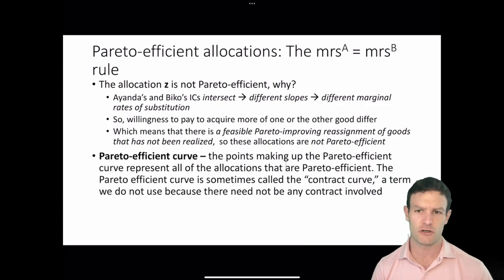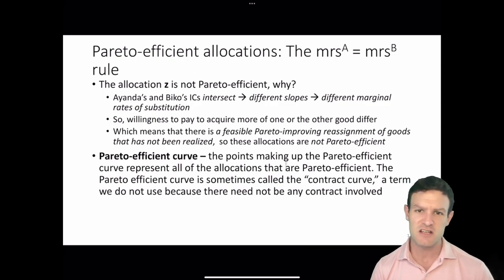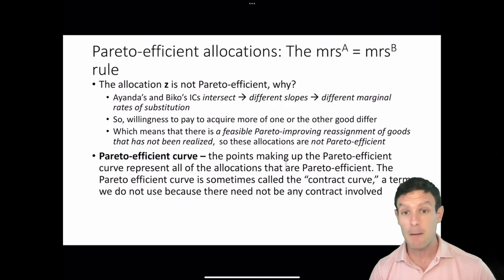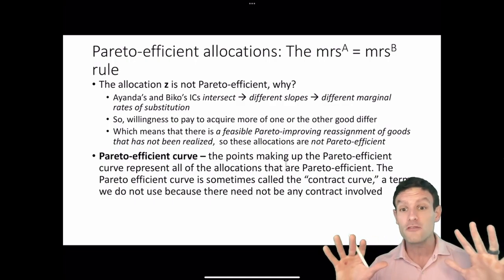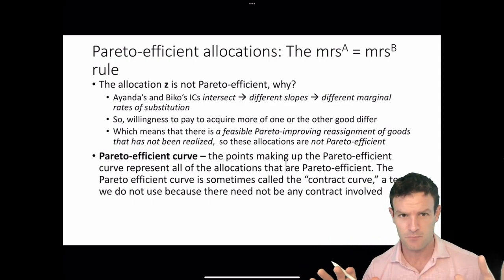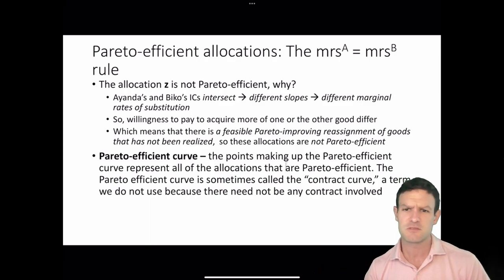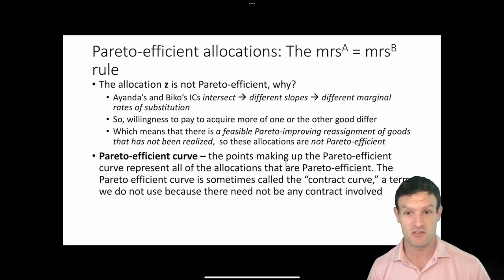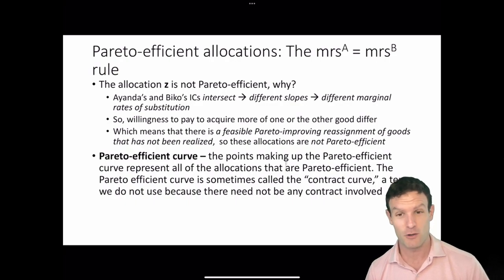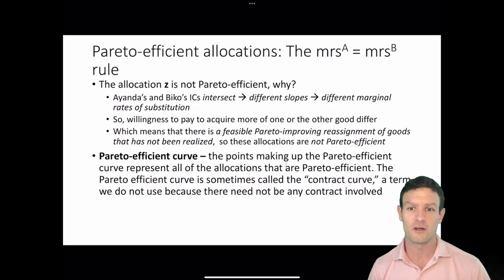The Pareto efficient curve is a term that we're going to use repeatedly. The points making up the Pareto efficient curve represent all of the allocations that are Pareto efficient. It is sometimes also called the contract curve, but we're not going to use that term because you don't actually need a contract to arrive at a point on the Pareto efficient curve. We'll call it the PEC, or Pareto efficient curve.